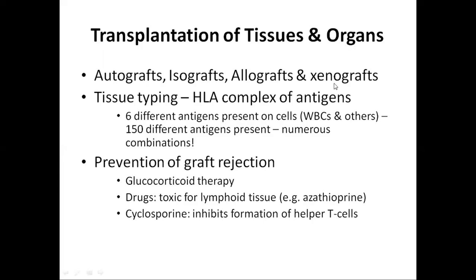The HLA antigen is responsible for graft rejection. HLA antigens are mostly present on the surface of antigen-presenting cells, so tissue typing is required for transplantation. There are six different types of antigens present on WBCs and other tissue cells, while there are 150 different antigens in total, allowing numerous combinations. Only six different antigens are present on a single individual's cells.